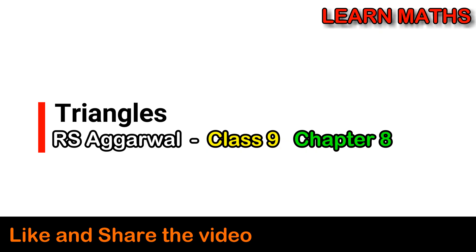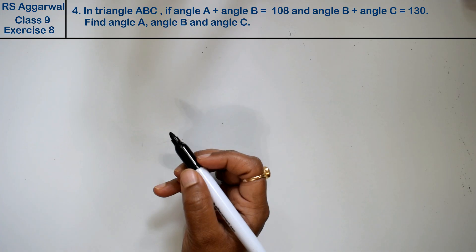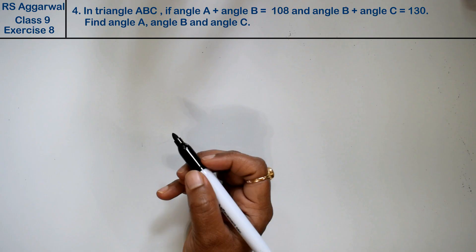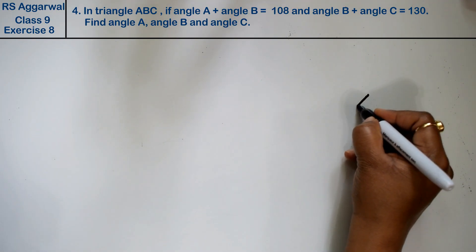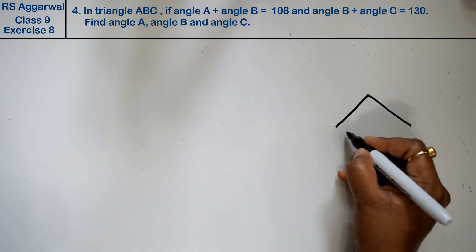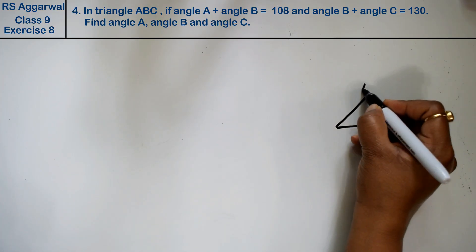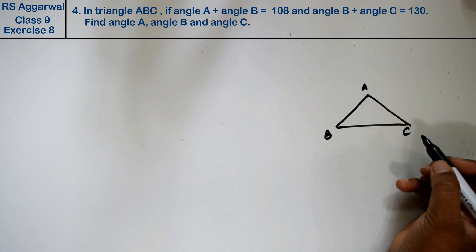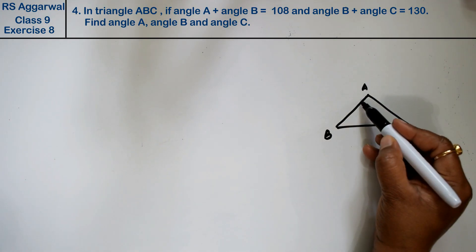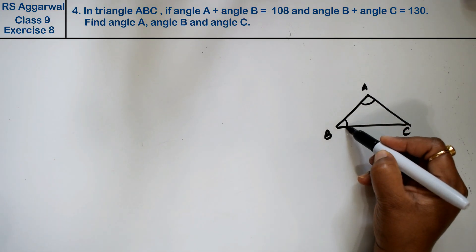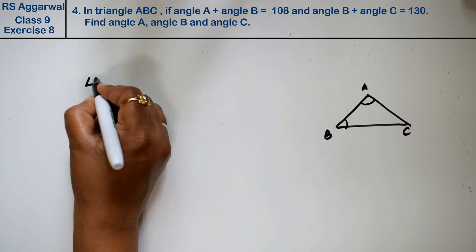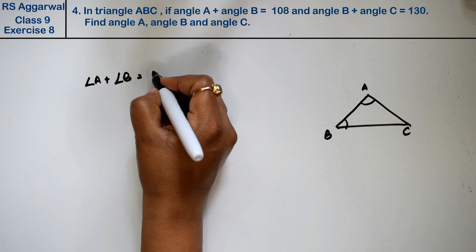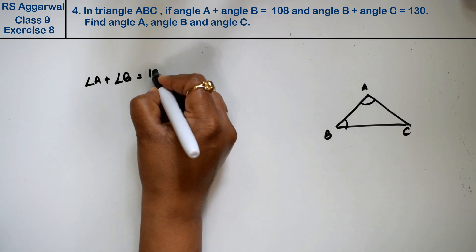Let's do question number 4 of exercise 8 on triangles. In triangle ABC, angle A plus angle B equals 108 degrees.